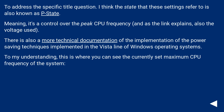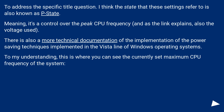To address the specific title question: the state that these settings refer to is also known as P state, meaning it's a control over the peak CPU frequency and, as the documentation explains, also the voltage used. There is also more technical documentation of the power-saving techniques implemented in the Vista line of Windows operating systems, where you can see the currently set maximum CPU frequency of the system.